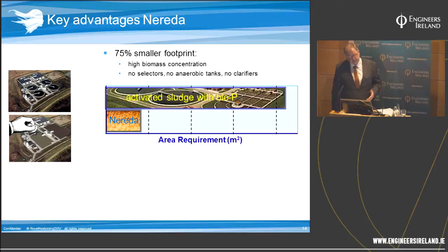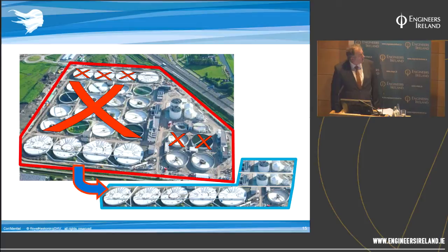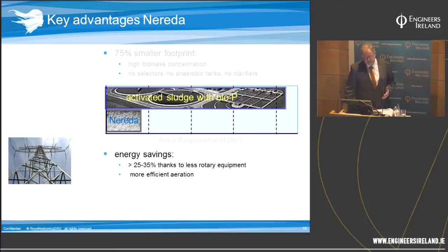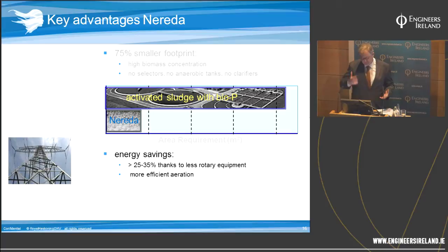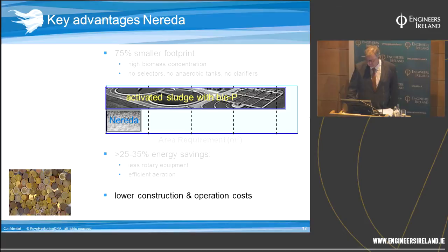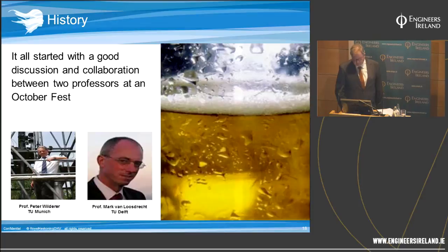In practical terms, the smaller footprint means the final clarifiers — the round tanks with the bridges — are eliminated. The upper drawing shows a traditional treatment plant with aeration basins and final clarifiers; in a Nereda design, those go away. This is illustrated by a well-known treatment plant near The Hague in the Netherlands. There are also energy savings due to two things: not pumping water around from one section to another means less rotary equipment, and oxygen transfer goes more efficiently in the reactor itself. Together, these lead to lower construction and operational costs.